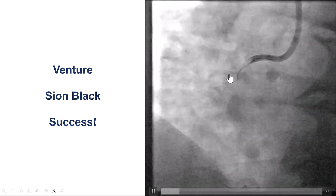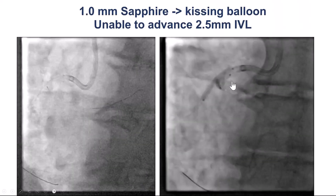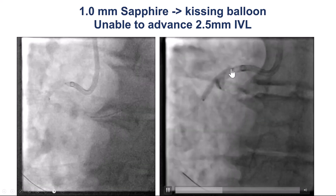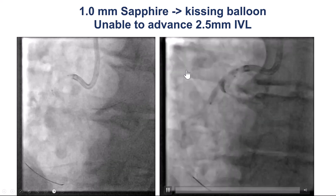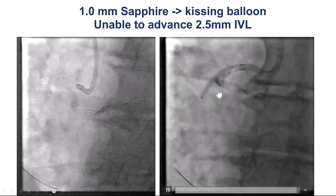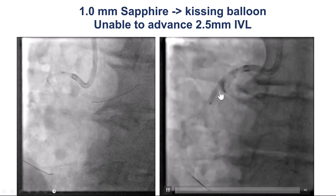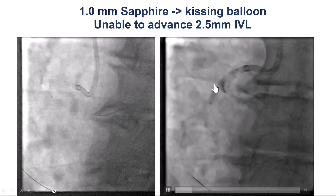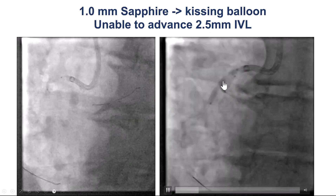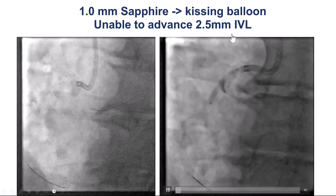Alternatives to the Venture include the Supercross as well as the Shapit angulated microcatheter. However, this was just the beginning of the problem. We then had a lot of difficulty delivering any equipment through the lesion. Eventually, we were able to advance a 1.0 mm sapphire balloon and did kissing balloon inflation, but we were unable to advance anything else into the circumflex — including a 2.5 mm IVL catheter — because of the combination of tortuosity and calcification.